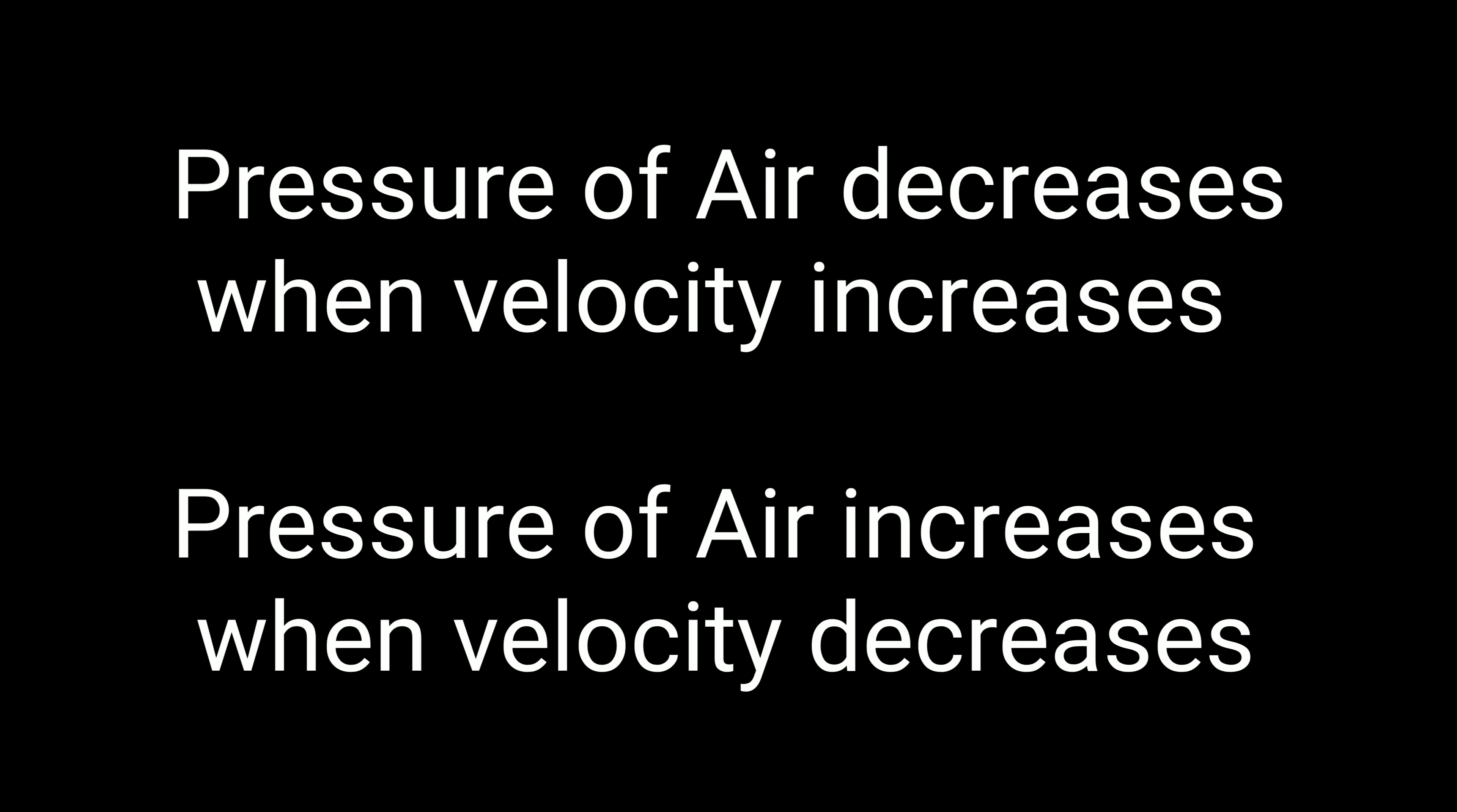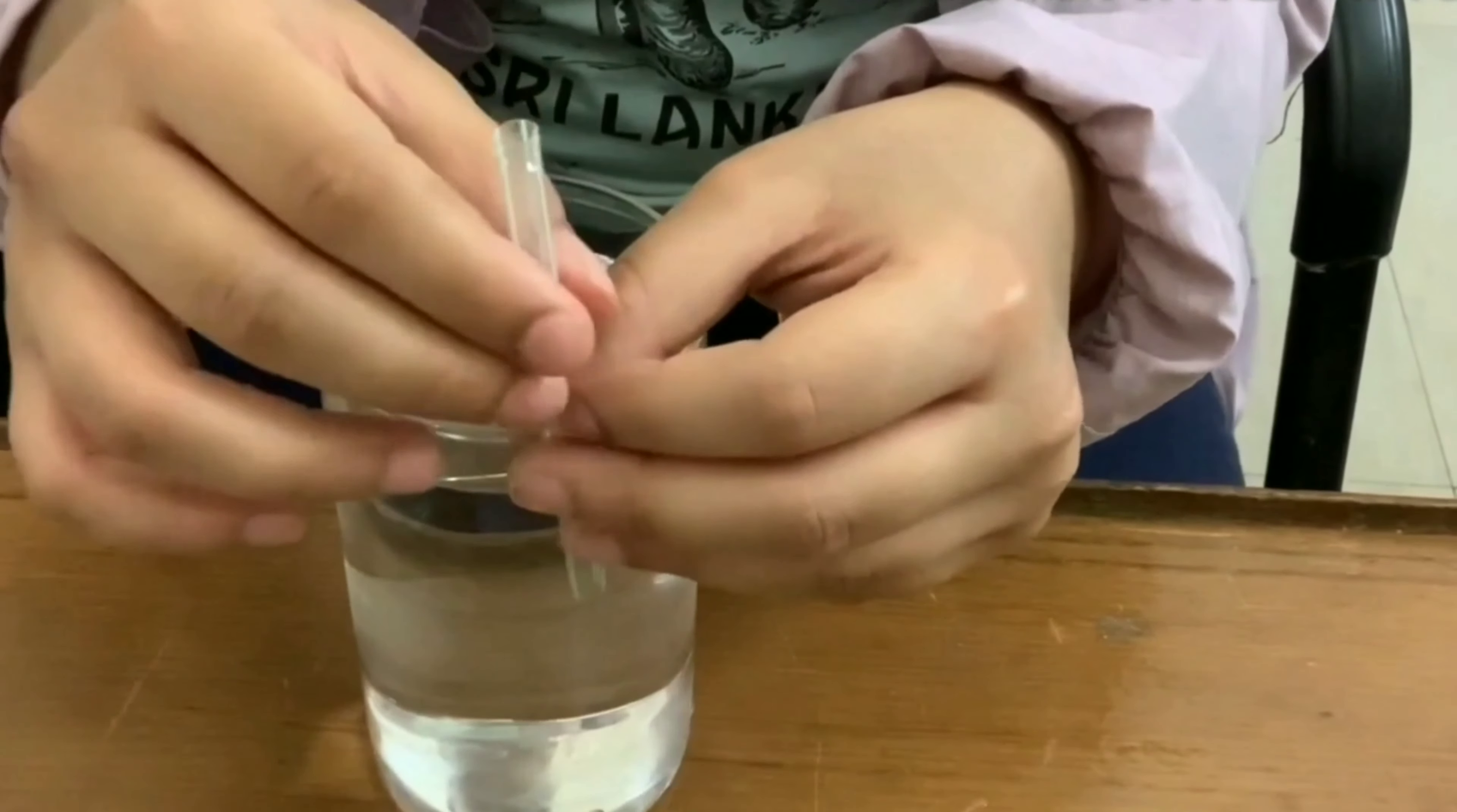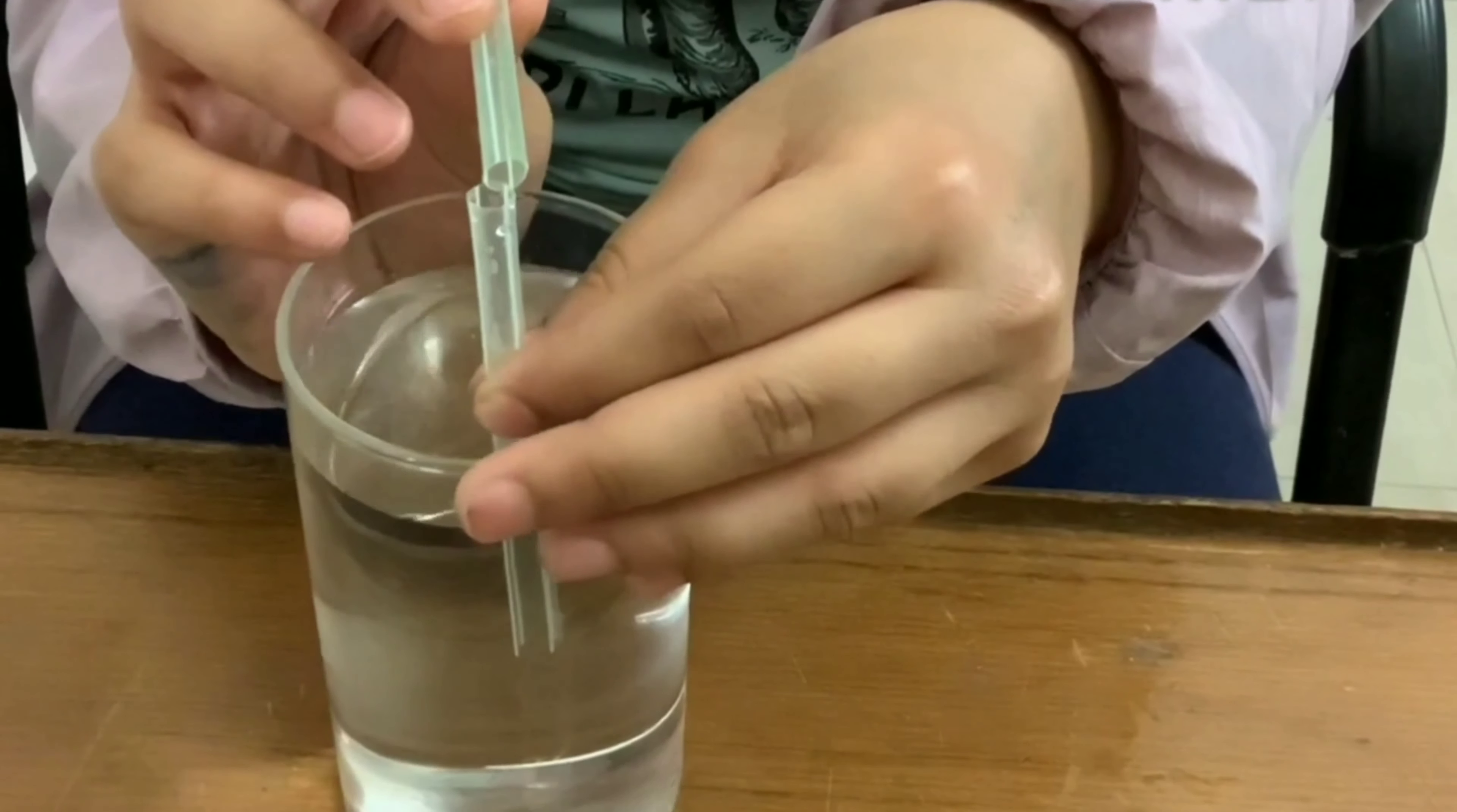To understand this, let us do an experiment. Take some water in a plastic cup and hold a straw upright in it. Upright means straight.